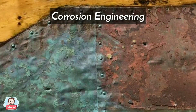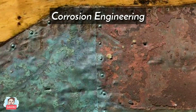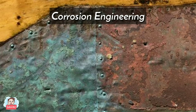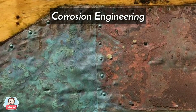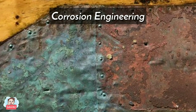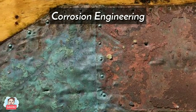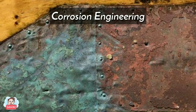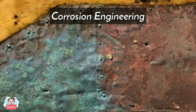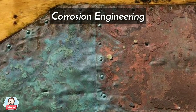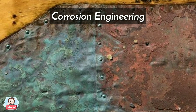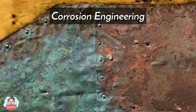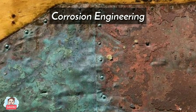Today we are going to discuss about Corrosion Engineering. Corrosion Engineering is the specialist discipline that requires application of scientific, technical and engineering knowledge along with natural laws and physical resources in order to design and implement materials, structures, devices, systems and procedures to manage the natural phenomenon known as corrosion.